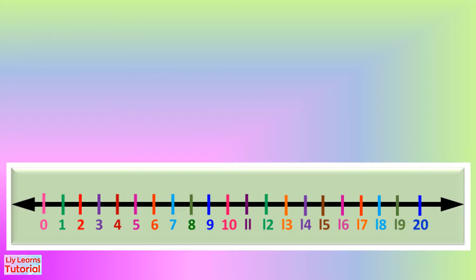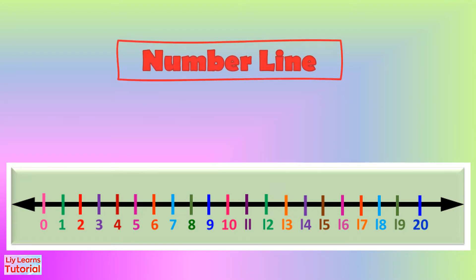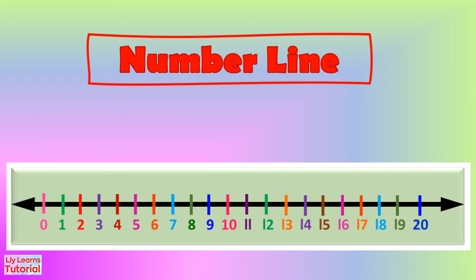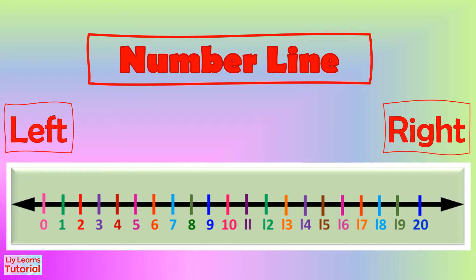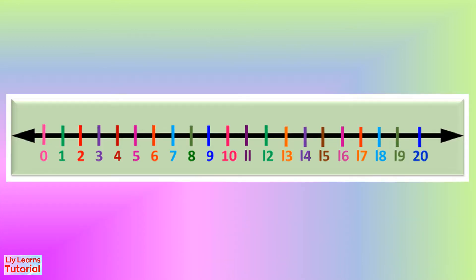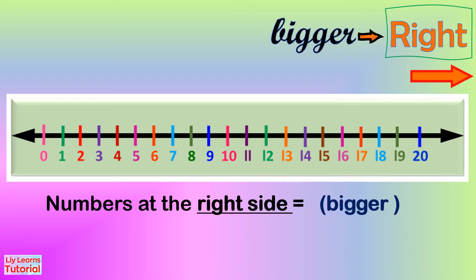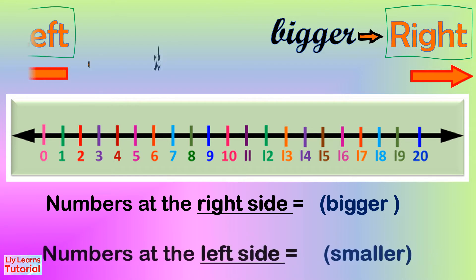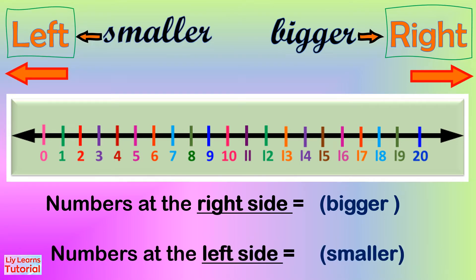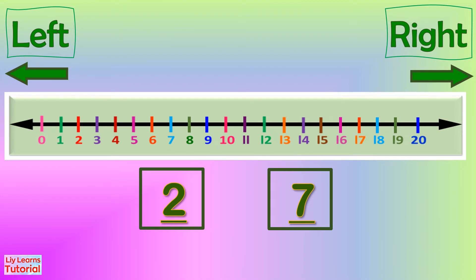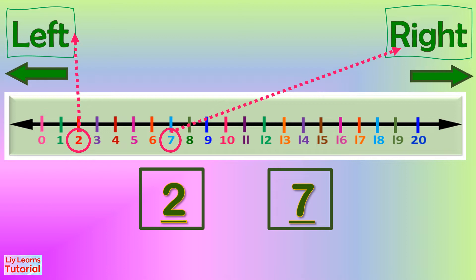When we compare numbers, we may use the number line. Always remember the left side and the right side of the number line. We have learned that numbers at the right side of the number line are bigger, and numbers at the left side are smaller. Let's have 2 and 7 as an example — we circle 2 and 7 on the number line. 2 is at the left and 7 is at the right side. Numbers at the right side are bigger.